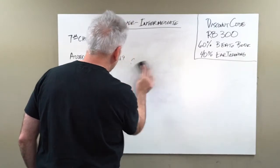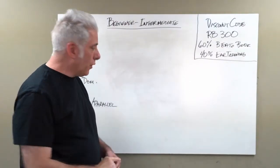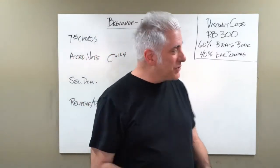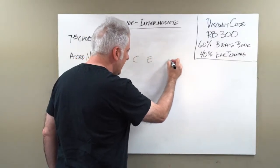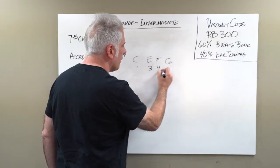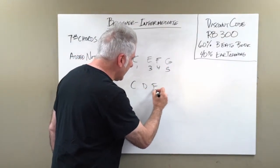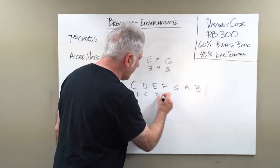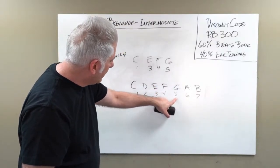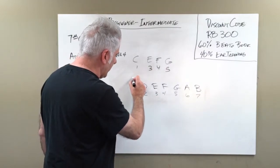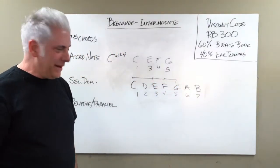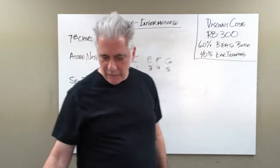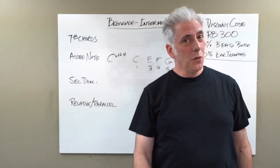There are other types of added note chords. C add 4 means take a C major chord - C, E, G - and add the fourth to it: 1-3-4-5. Think of a C major scale: C, D, E, F, G. You take the first, third, fourth, and fifth notes and put them together to get a C add 4. Why do you need to know an add 4? Because it sounds cool.